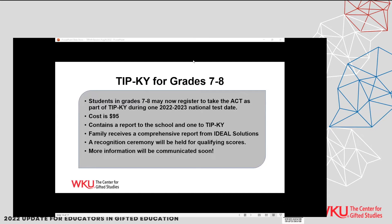That leads to the question: why is the cost more expensive than the regular ACT? The ACT cost is $63, and then there's an additional cost for the comprehensive report that looks at the student's actual scores and provides service options that are a match for their scores. There is also a TIP Kentucky fee for being able to provide the benefits that we offer.